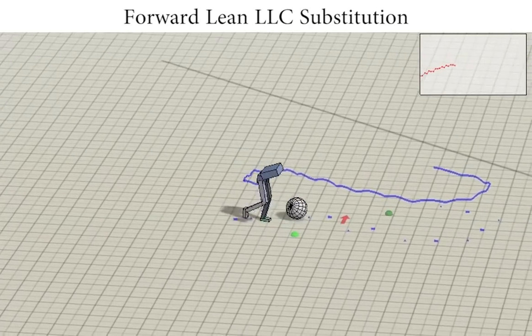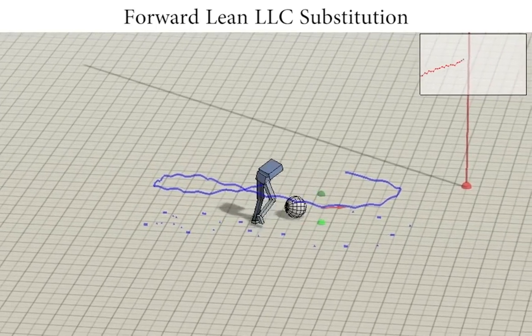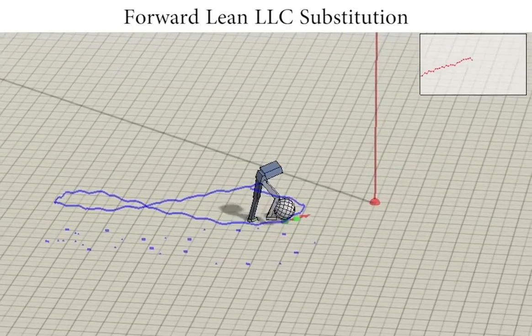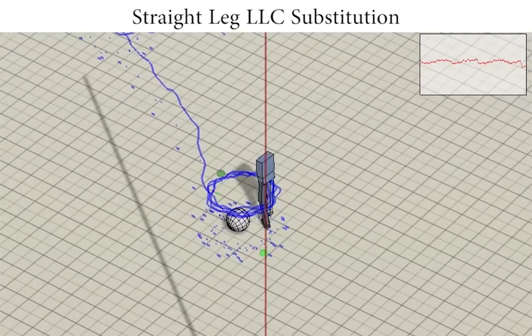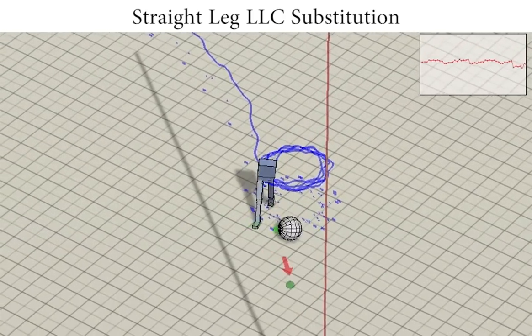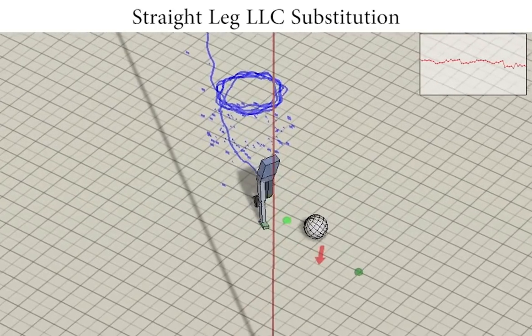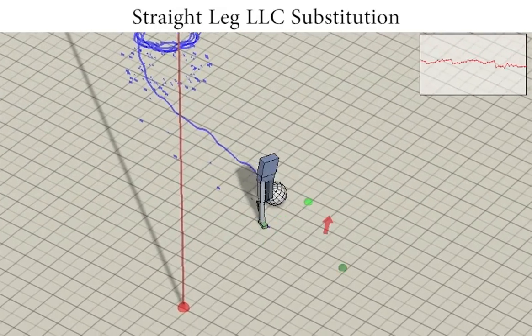Thanks to the control hierarchy, we can switch between different low-level controllers without additional training. Here we show different low-level controllers with a high-level controller that was trained with only the nominal walk low-level controller.